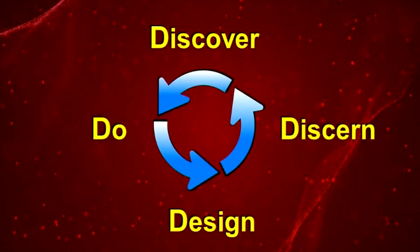The last step is to execute on the plan you have. And the fifth piece of this, which is also very important, is that this is not linear. You don't just go through the four steps and you're done — it's actually circular. As you are in the act of doing, you are also discovering. You're having continual conversations, seeing the results of the project you've developed, and whether it's getting the results you want. So you're doing and then discovering, and that leads you back in. You may take the strategy or plan and continue discerning, tweaking, designing, recreating, and then doing again. This circular motion continues: discover, discern, design, and do — and back into the cycle.